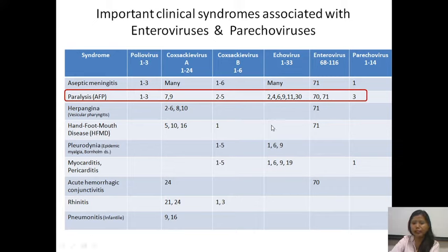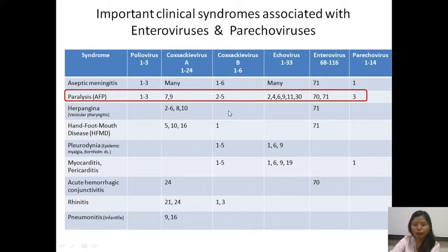This table shows different clinical syndromes associated with Picornaviridae, where paralysis or acute flaccid paralysis is commonly associated with poliovirus types 1, 2, and 3 but can also be seen with other enteroviruses — mainly Coxsackievirus A7, A9, Coxsackievirus B2–B5, certain echoviruses, and Enterovirus 70, 71, and parechovirus 3.